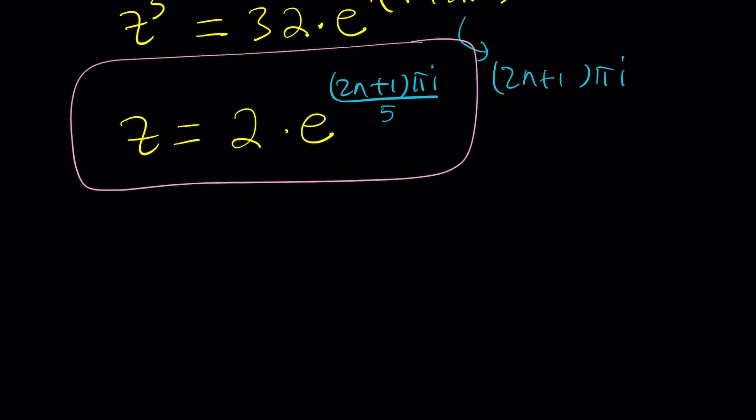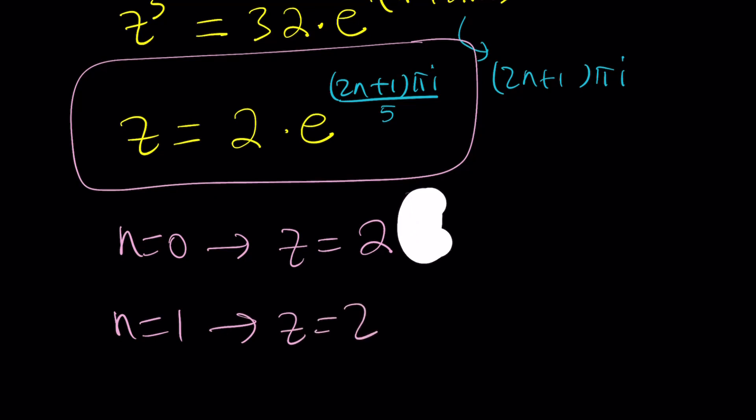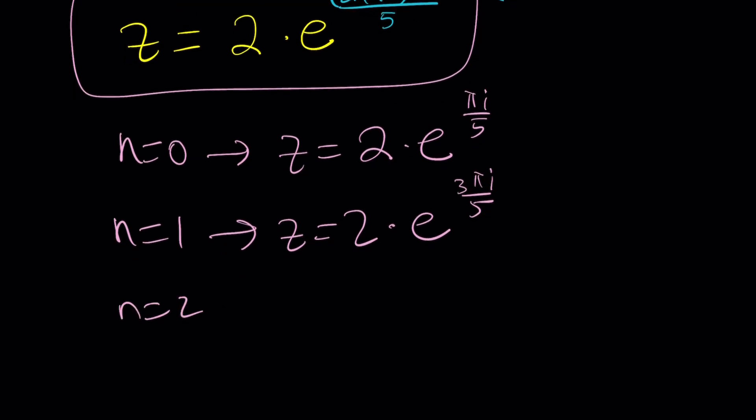We're going to replace n with different values. What happens if n equals 0? You get z equals 2 times e to the power pi i over 5. What happens if n equals 1? Then z is going to be 2 times e to the power 3 pi i over 5. And n equals 2 is going to produce 2 times e to the power 7 pi i over 5. By the way, we're going to get another term in the middle. This is going to be 5 pi i over 5, which is pi i. But this is equal to negative 2 and we don't want that. That's not a valid solution.